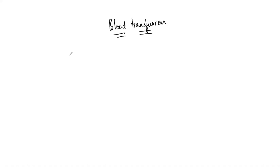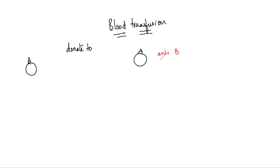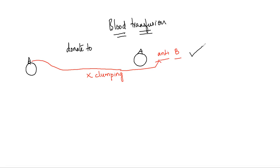Let me first talk about donors. If I speak about blood group A, a person with blood group A is going to have antibody B. These antigens are immunologically very active and they trigger these antibodies. If this person donates blood to another person with blood group A, the antigen and the antibody do not match. There is no clumping of blood, so it is 100% safe — you can donate blood to this particular person.